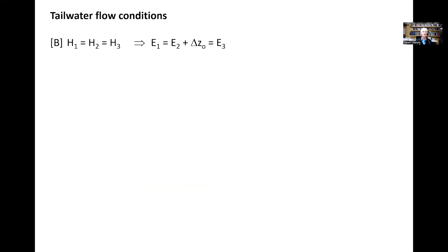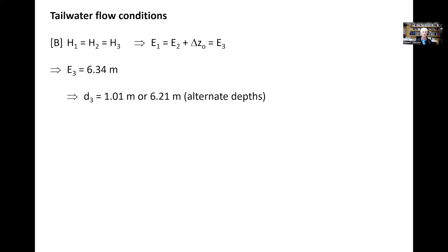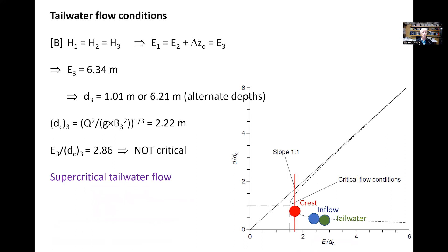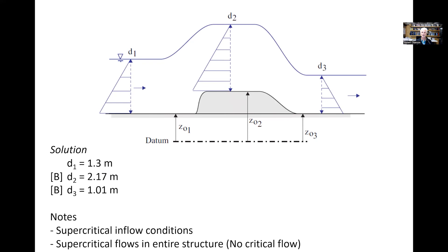For the tailwater condition, applying H₁ = H₂ = H₃ gives the specific energy at the downstream section with two possible alternate depths. Computing E/dc, the ratio is not critical, and the tailwater conditions shown in green on the graph indicate supercritical flow. Moving from the sill to the tailwater condition along the dashed line from the red dot to the green dot, we have supercritical tailwater conditions. In summary, we have supercritical inflow leading to supercritical flow throughout the entire structure, as critical flow condition is not reached at the weir crest.